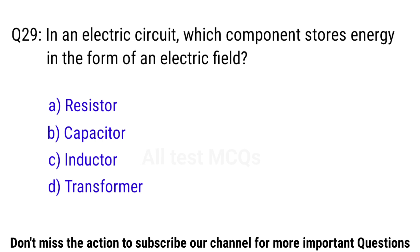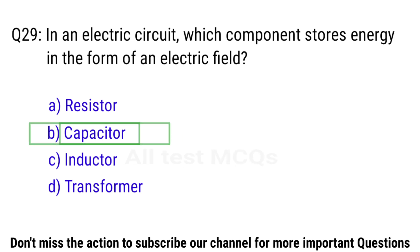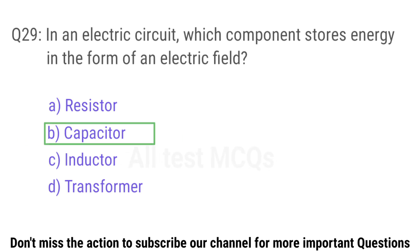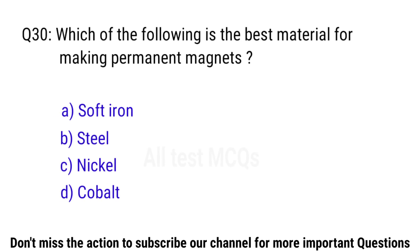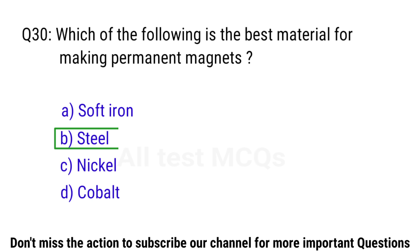Q30. Which of the following is the best material ideal for making permanent magnets? The right answer is option B. Steel.